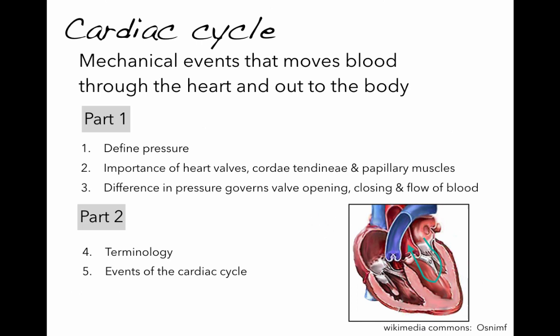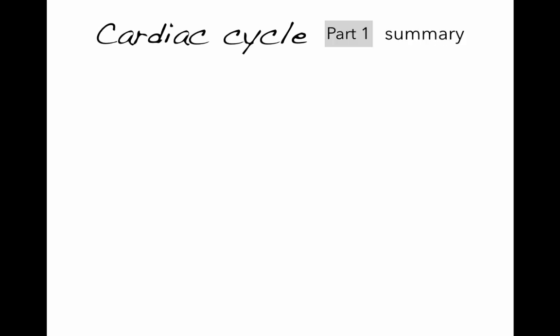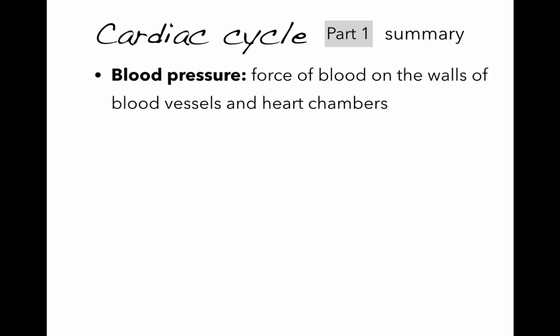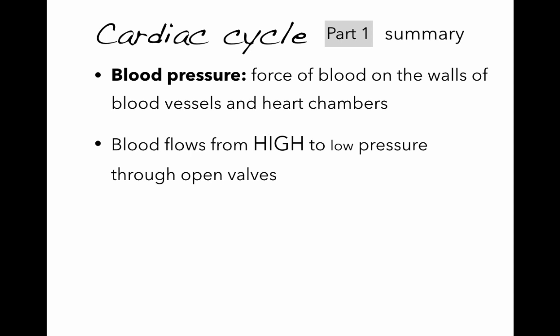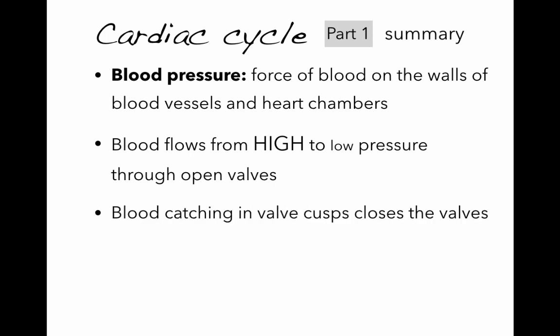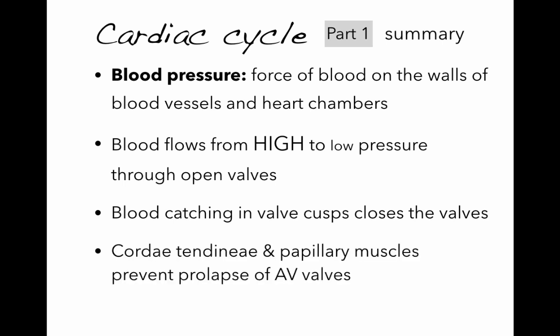To review what we've covered in part one: blood pressure is the force of blood on the walls of blood vessels and heart chambers. Blood flows from areas of high to low pressure through open valves. Blood catching in valve cusps closes them, and the chordae tendinae and papillary muscles prevent prolapse of the AV valves.